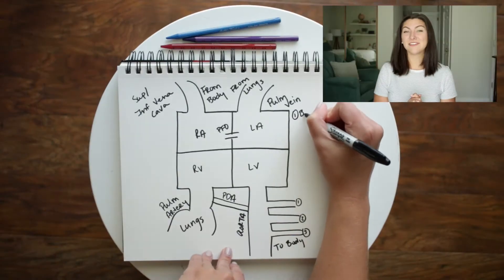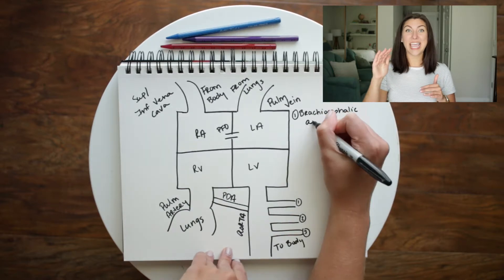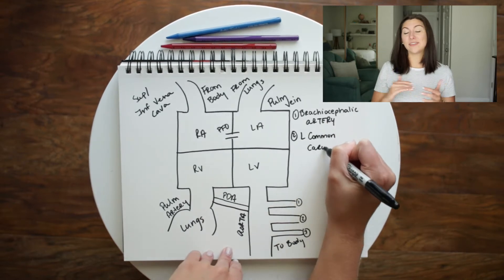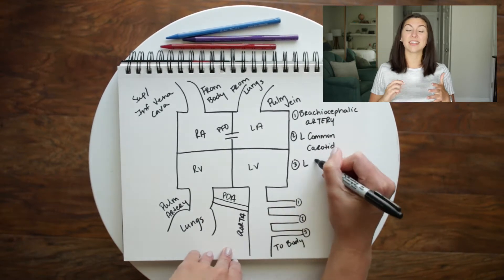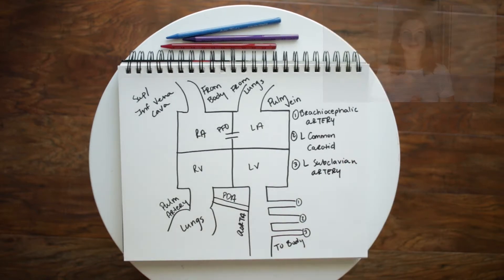On this drawing I have drawn three branches of the aorta, and these are important branches. The first is the brachiocephalic artery, and notice that this first branch occurs right before the PDA. After the PDA we have two more branches: the left common carotid and the subclavian artery. Note the importance that the PDA is below that first branch.